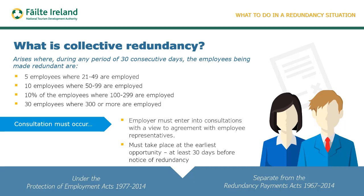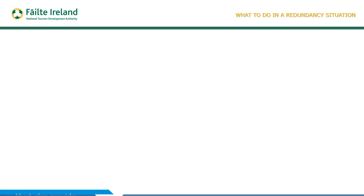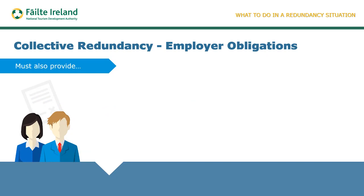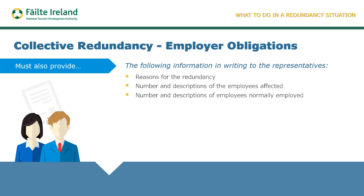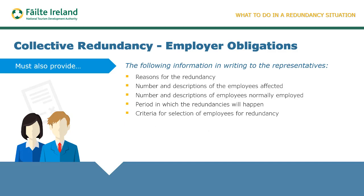The aim of the consultation is to consider whether there's any alternative to the redundancy and to discuss the terms of same. The employer is also obliged to provide the following information in writing to employees when a redundancy occurs: the reason for the redundancy; the number and description of the employees affected; the number and description of employees normally employed; the period in which the redundancies will happen; the criteria for selection; and the method of calculating any redundancy payment.